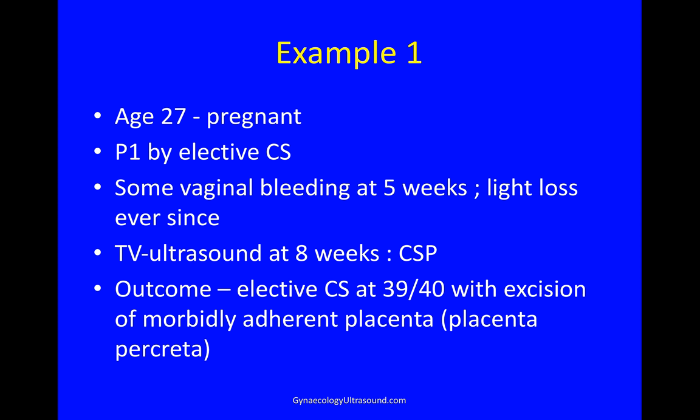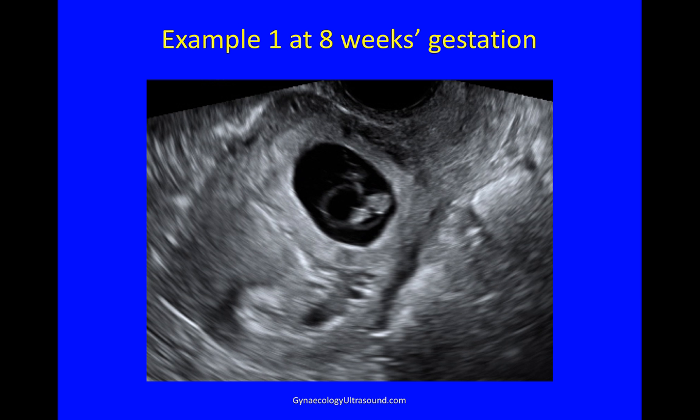Here is a clinical example. This patient was 27 years old and attended in her second pregnancy. She had had one child by elective caesarean section. She developed some vaginal bleeding at 5 weeks and had had some light loss ever since. She had an ultrasound examination for the first time at 8 weeks, which showed a caesarean scar pregnancy. She was eventually delivered by elective caesarean section at 39 weeks, with excision of a morbidly adherent placenta — a placenta percreta on histology.